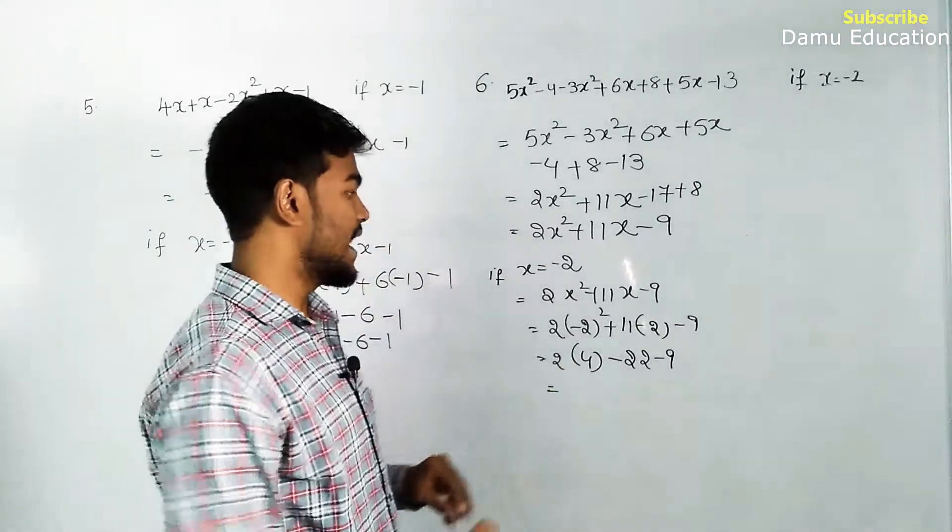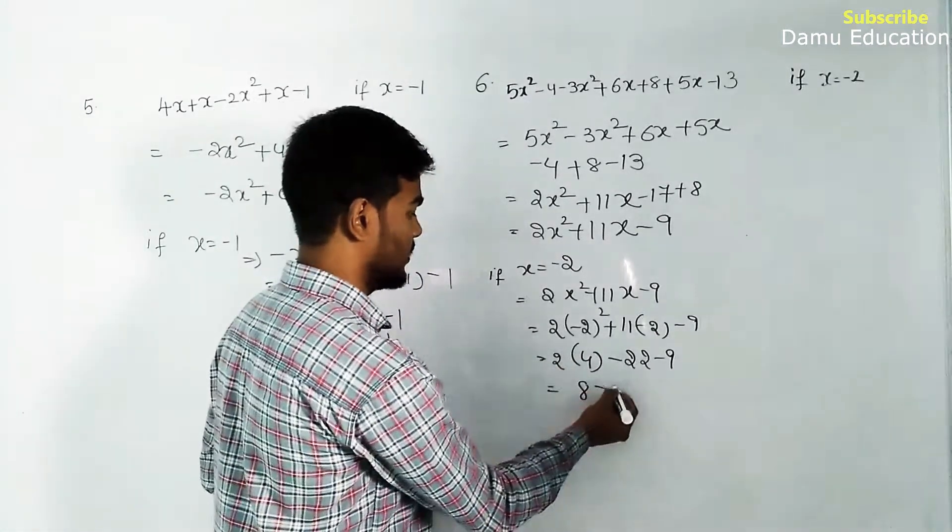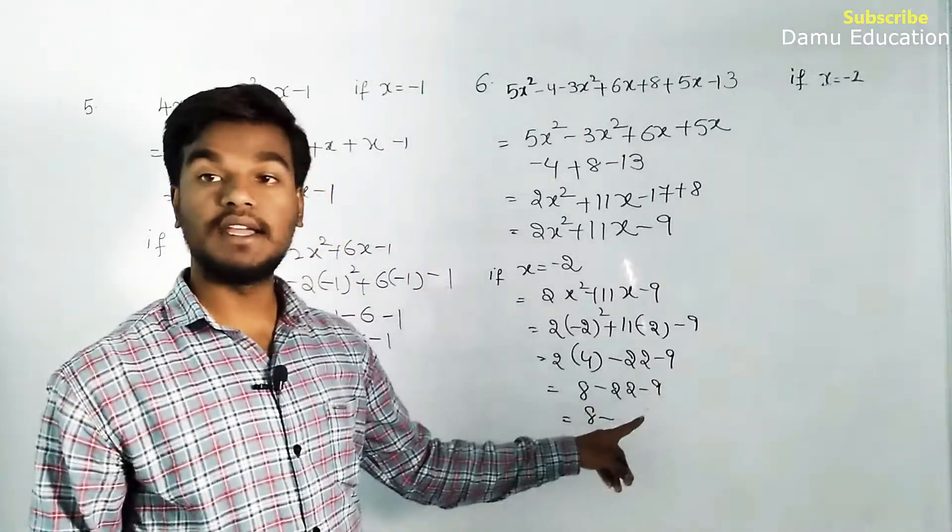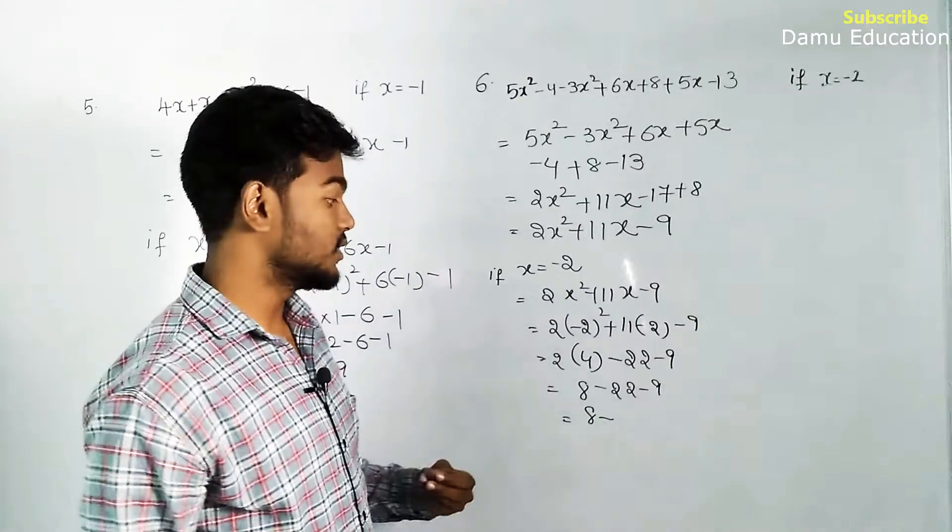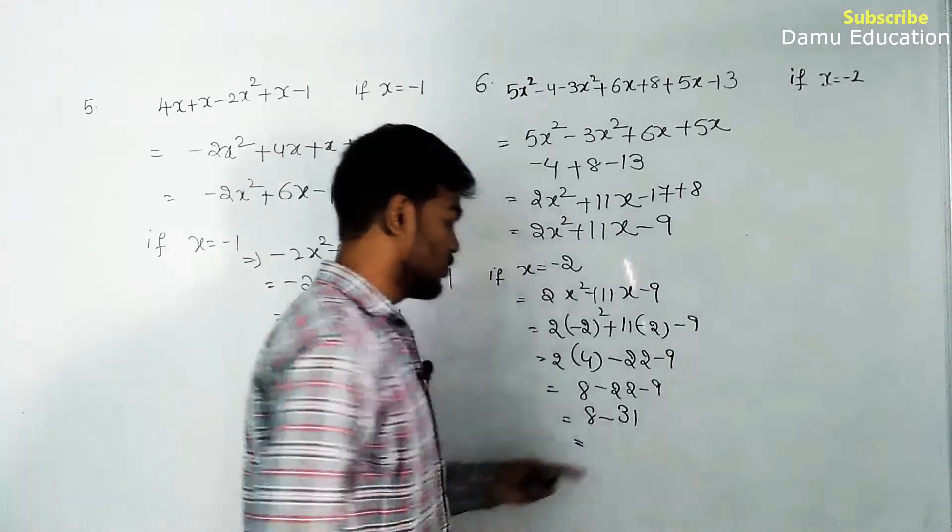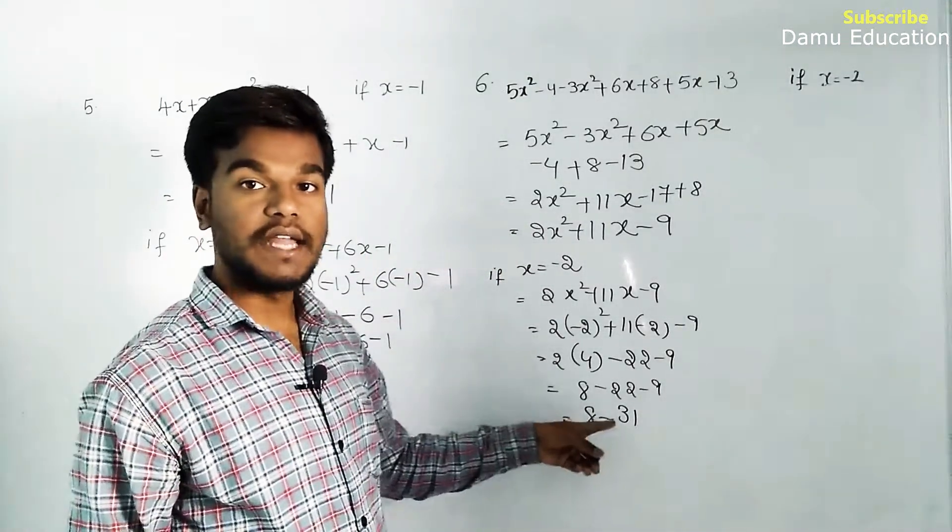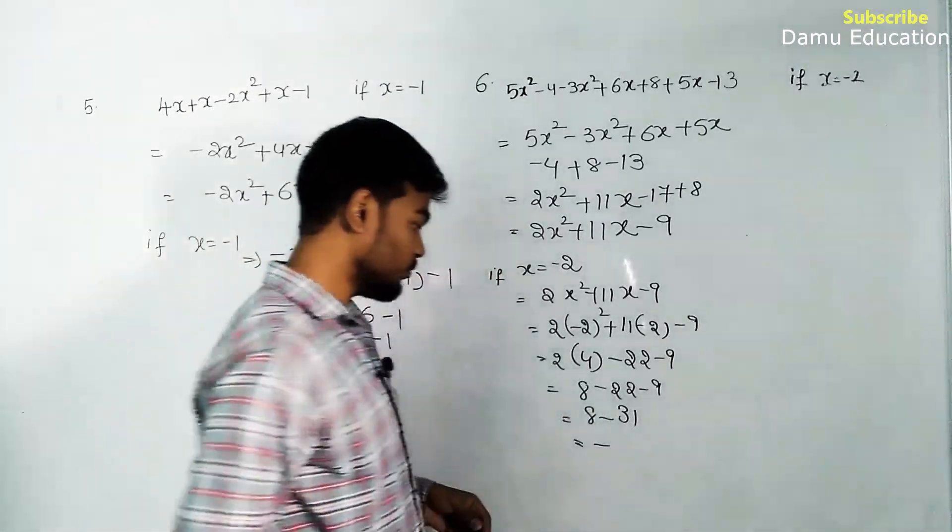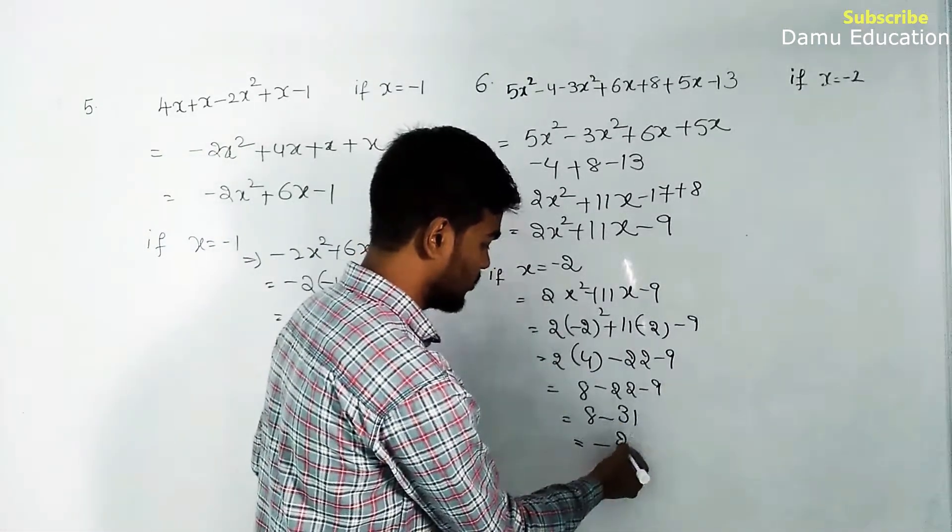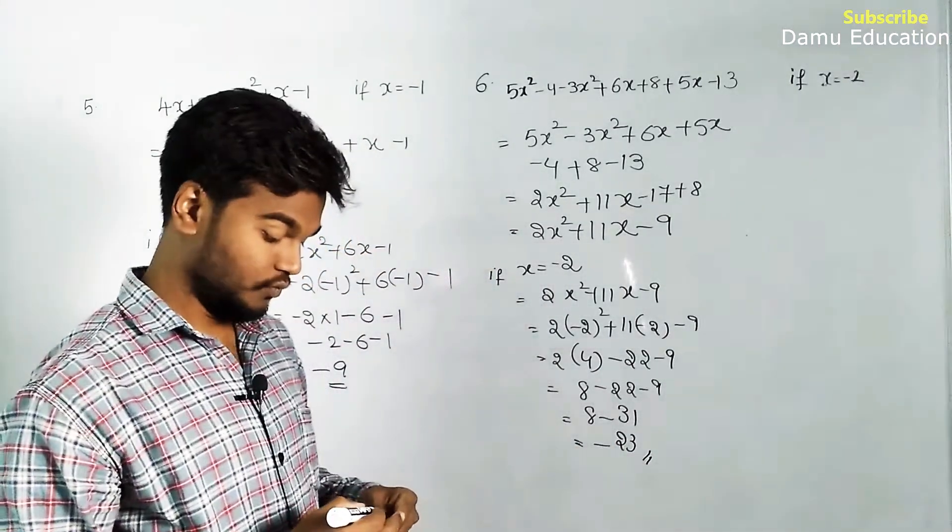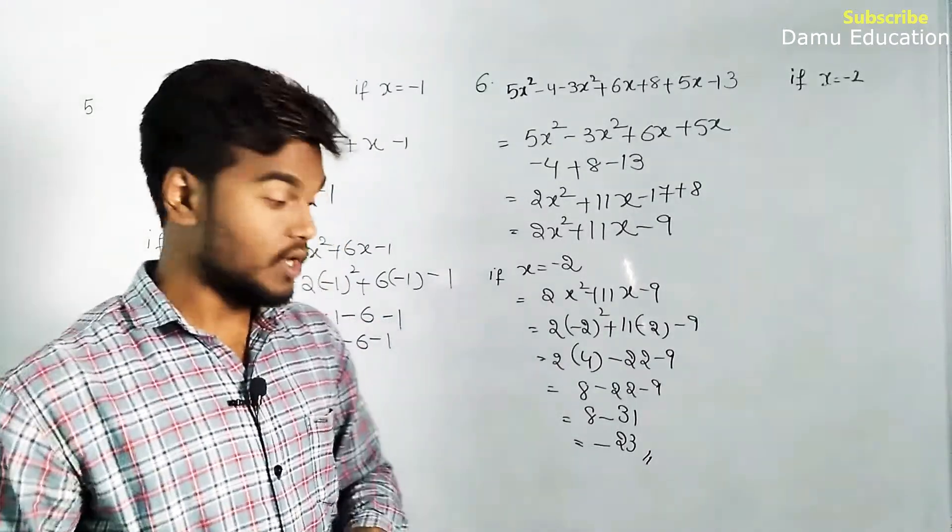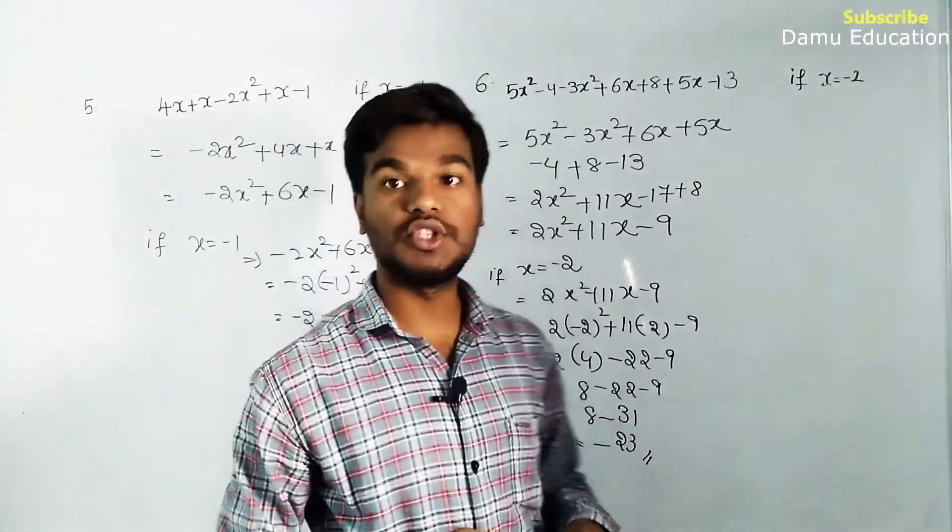8 - 22 - 9. Add the negatives: 22 + 9 = 31. Then 8 - 31 = minus 23.